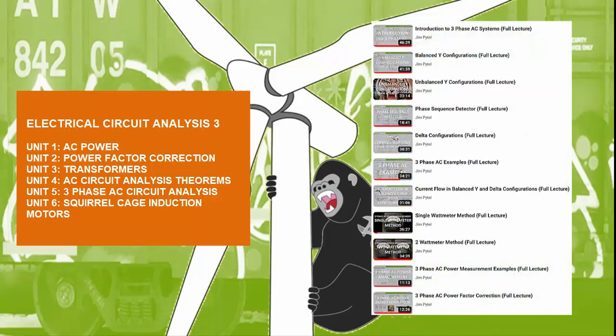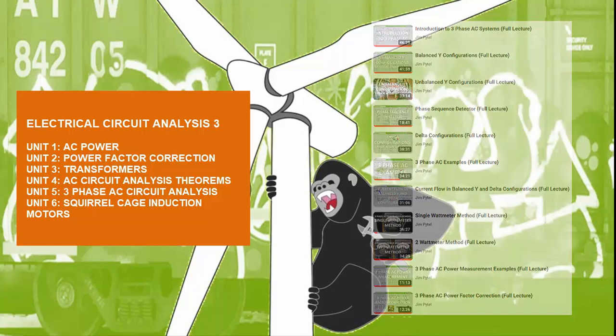Following these topics, the series moves on to the three-phase AC circuit analysis playlist and examines balanced and unbalanced three-wire Y, four-wire Y, and delta configurations, and introduces three-phase AC power measurement techniques like the single wattmeter method and the two wattmeter method.